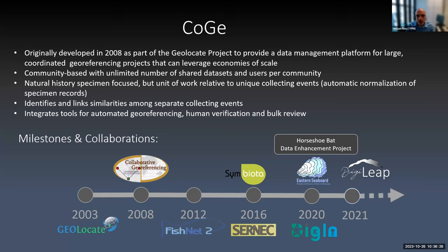GeoLocate originally started in 2003, but then somewhere around 2008, we expanded and decided to build a data management platform so that coordinated geo-referencing projects could work together and take advantage of commonalities amongst data, shared geo-referencing practices and things like that. And that's what led to the initial creation of this product.